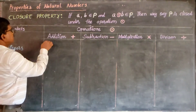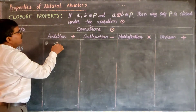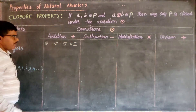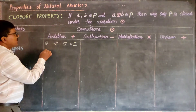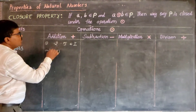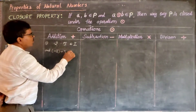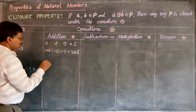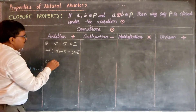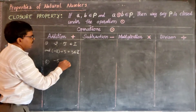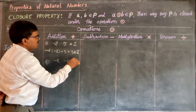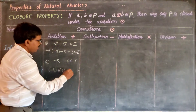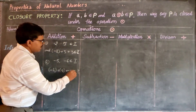For addition, take two integers: minus 2 and 5. These are integers, and the sum minus 2 plus 5 is equal to 3. This 3 is an integer. Take another example: minus 5 and minus 6 are two integers, and minus 5 plus minus 6 is equal to minus 11. This minus 11 is also an integer.